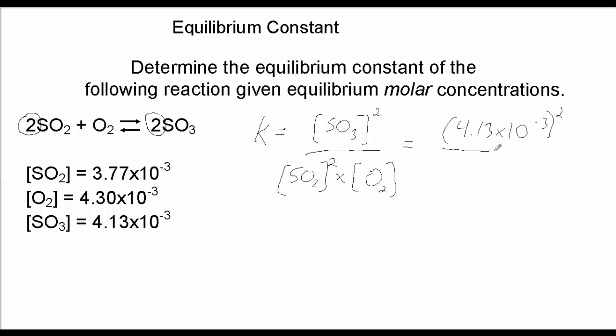And divide that by the SO2 concentration squared, which is 3.77 times 10 to the minus 3, quantity squared. And that's multiplied by the O2 concentration, which is 4.30 times 10 to the minus 3.